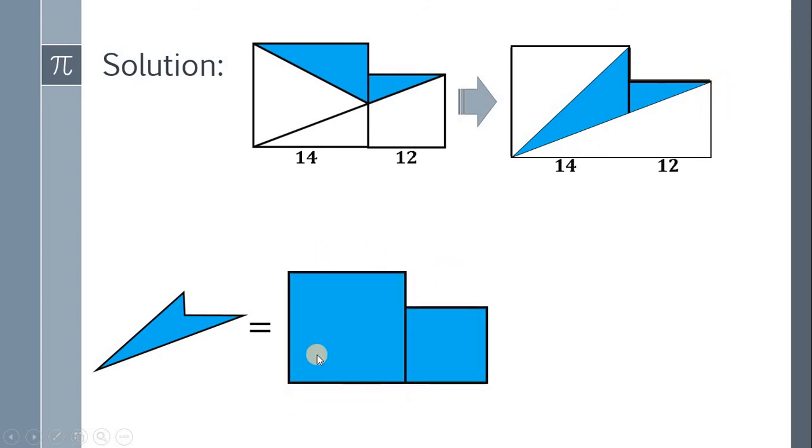We need to find the area of these two squares minus the area of these two right triangles. Now, we know that the size of these two squares are 14 and 12. Therefore, the sum of their areas must be 14 squared plus 12 squared, or simply 340.